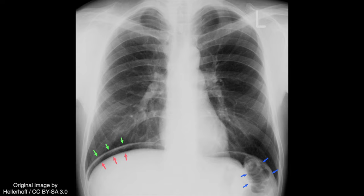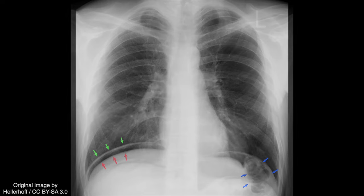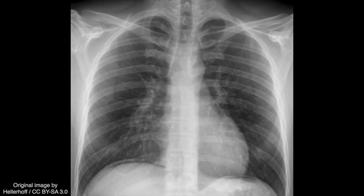Pneumoperitoneum refers to free gas in the peritoneal cavity, and it appears on an erect chest radiograph as a subdiaphragmatic lucency. The green arrows demarcate the right hemidiaphragm, which appears as a thin white line. The red arrows demarcate the upper border of the liver, and between the liver and the right hemidiaphragm is a thick crescent of air. Sandwiched between the blue arrows is a portion of gas-filled colon, with free air under the left hemidiaphragm adjacent to it. In a less conspicuous case, the thin area of increased blackness between the diaphragm (highlighted in purple) and the liver is the subdiaphragmatic air (highlighted in blue).